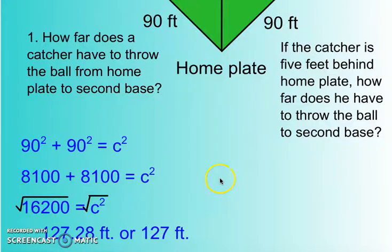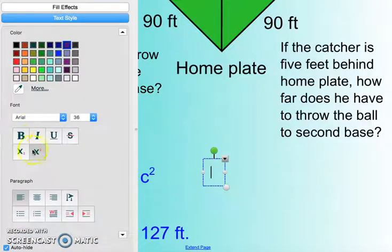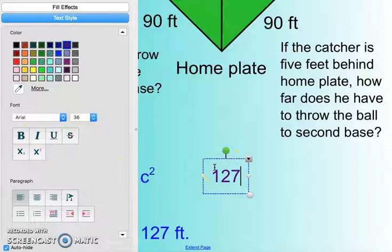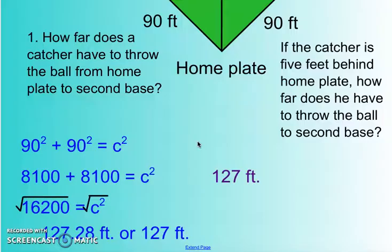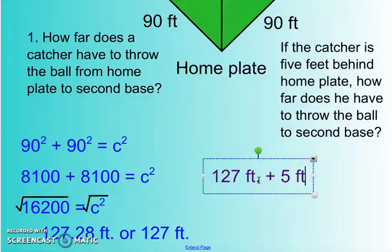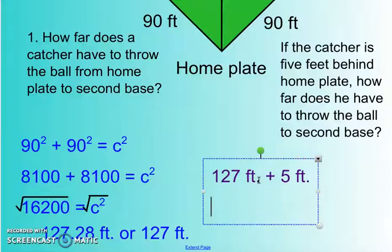We already found out how far it is to throw from home plate to second base, correct? Now if the catcher is 5 feet behind home plate, really, we're just adding 5 feet to the answer that we found. We found that it was 127 feet. So if we take 127 feet and add on 5 feet, the catcher now has to throw 132 feet to second base. Nice job.